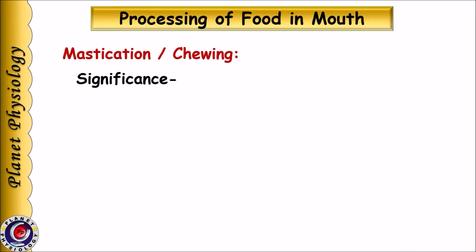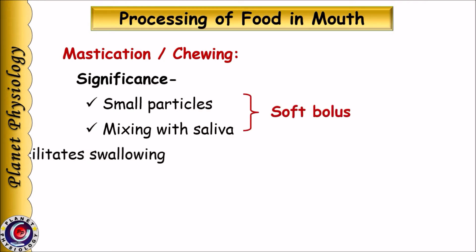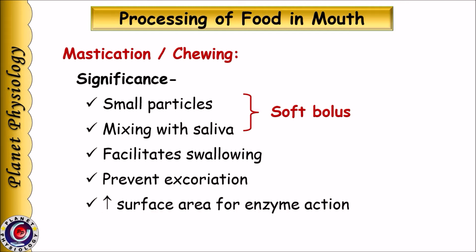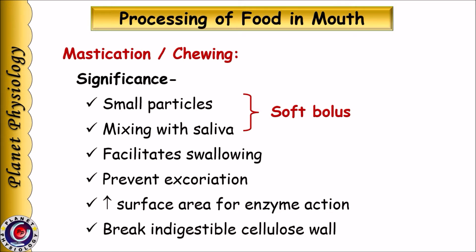Let us begin with the process of mastication. In simple words, mastication means chewing. It breaks down the larger food particles into smaller particles and at the same time mixes these particles with saliva. This helps in formation of soft bolus which facilitates the process of swallowing. Mastication also prevents excoriation of oral mucosa and increases surface area for the action of enzymes. It also helps to break down indigestible cellulose wall.